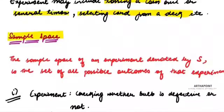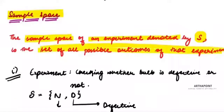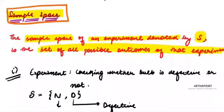A sample space is all possible outcomes of an experiment. For example, when I toss a coin, I can only get heads or tails — that becomes my sample space. When I throw a dice, I can get 1, 2, 3, 4, 5, or 6 — that becomes my sample space. The sample space of an experiment is denoted by S and is the set of all possible outcomes. A sample space is a bigger set — it consists of all possible outcomes.